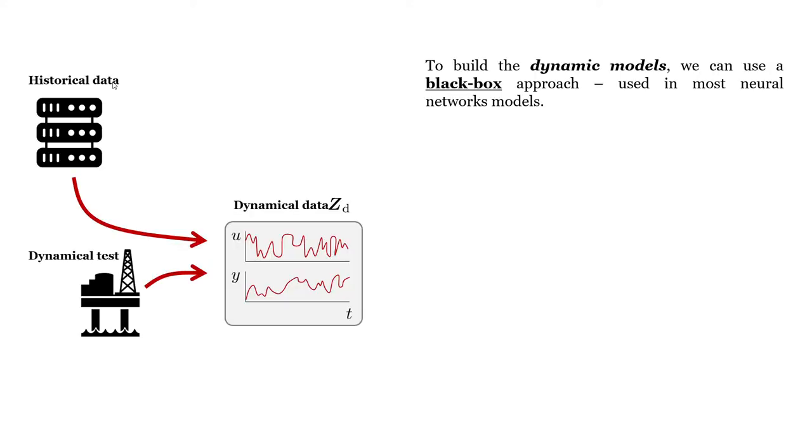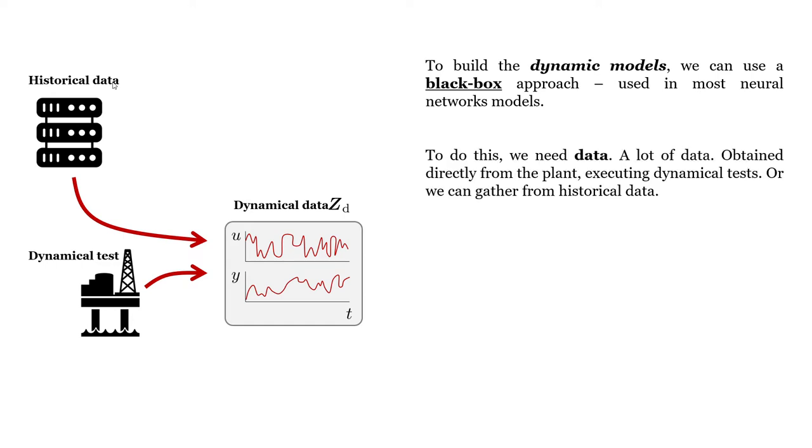To build the dynamic models, we can use the black box approach used in most neural network models. To do this, we need data, a lot of data, obtained directly from the plant by executing dynamical tests, or we can gather it from historical data.